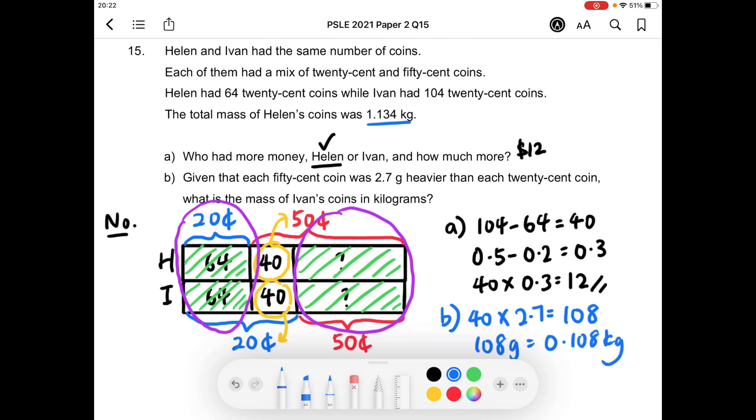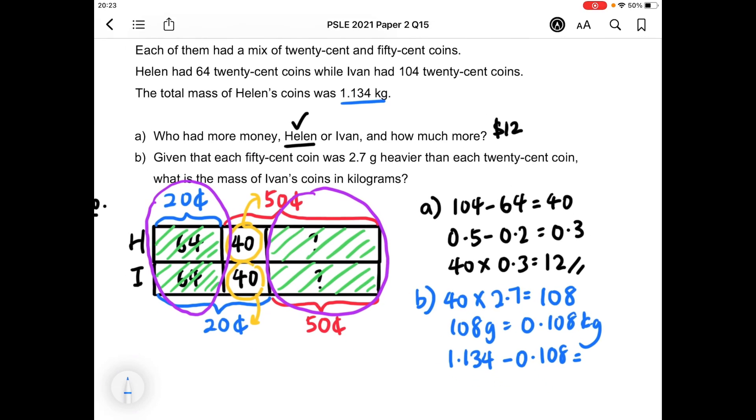lighter than the mass of the 40, 50 cent coins that Helen had. So in order to find out the mass of Ivan's coins, we can just take away 0.108 from 1.134, to get the answer for this question. And that will be 1.026 kg.